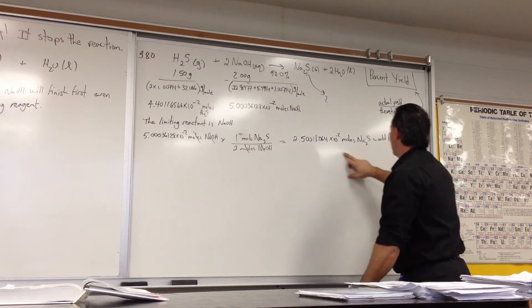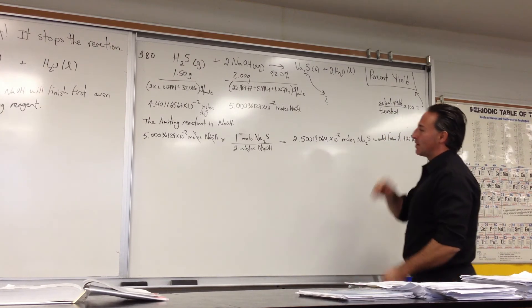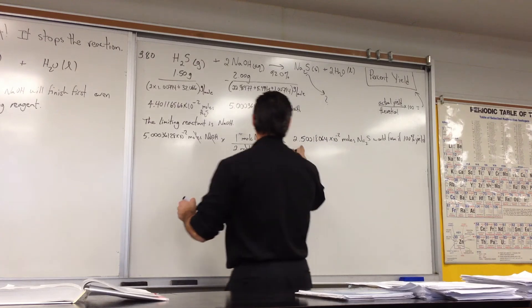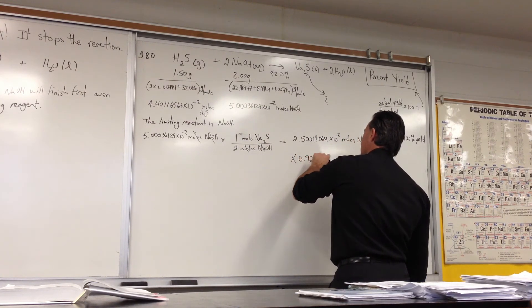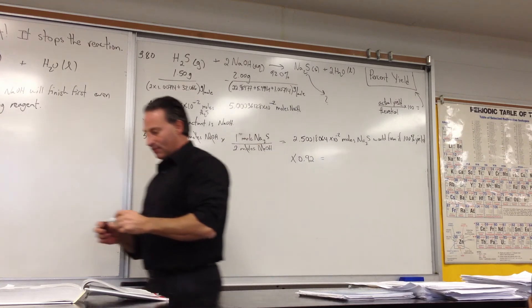Once you get this number, you then multiply it by the percent yield. So you're going to multiply this number by 0.92, because it's a 92% yield. And that will give us...